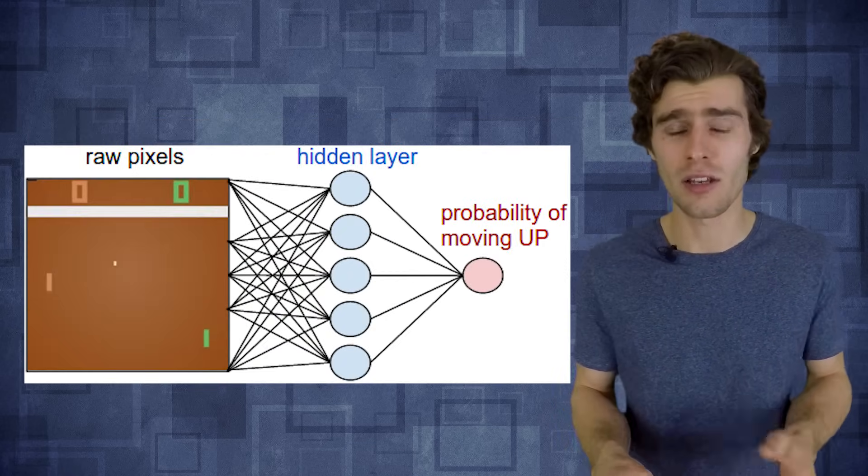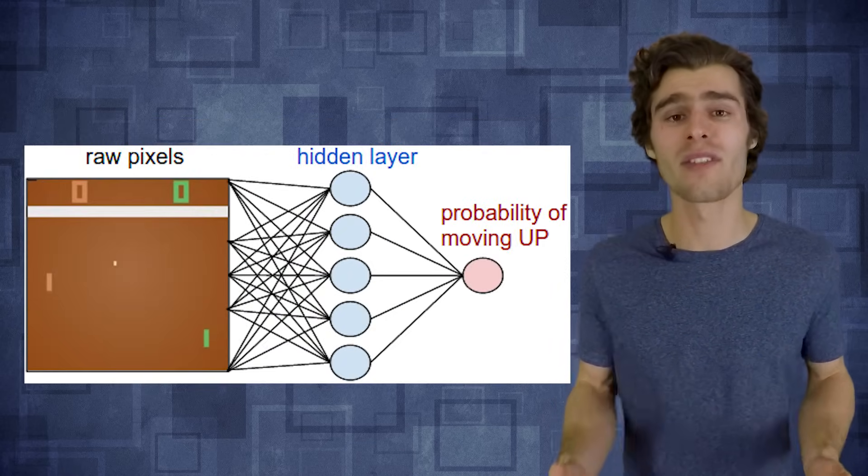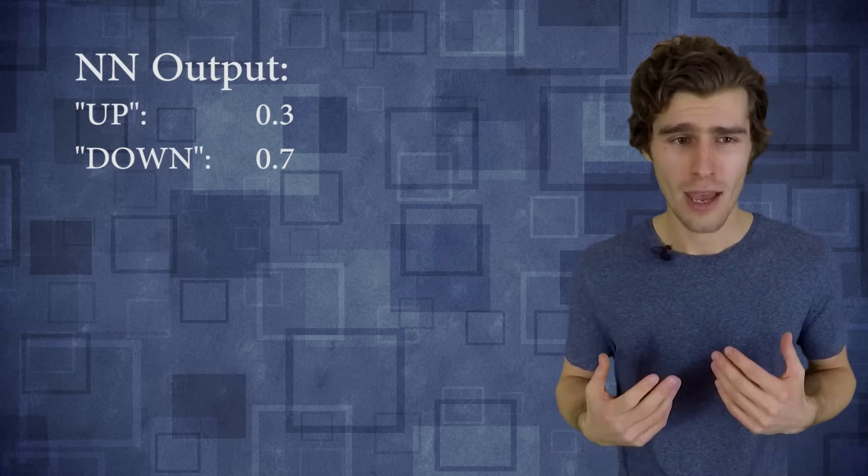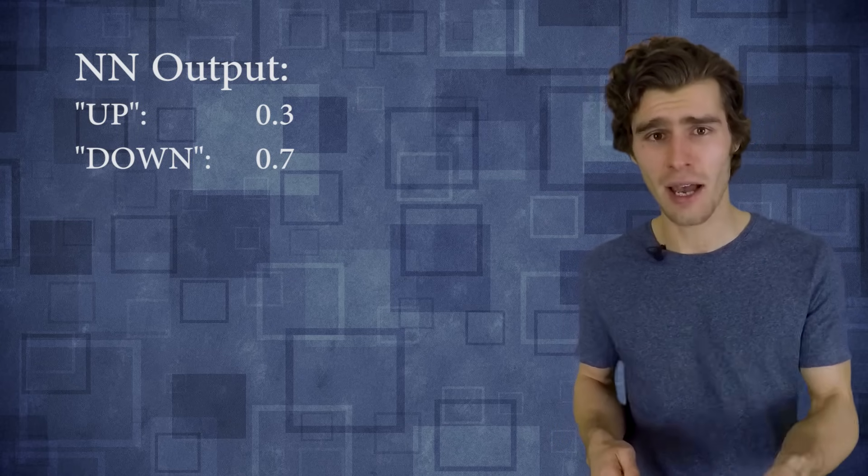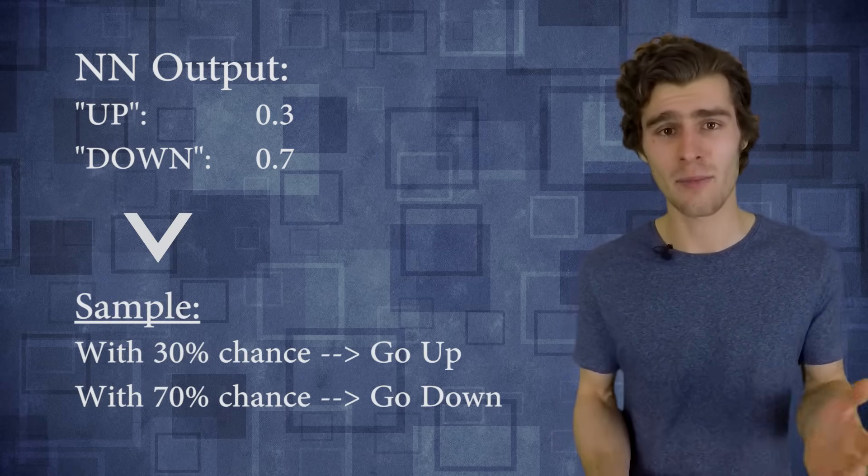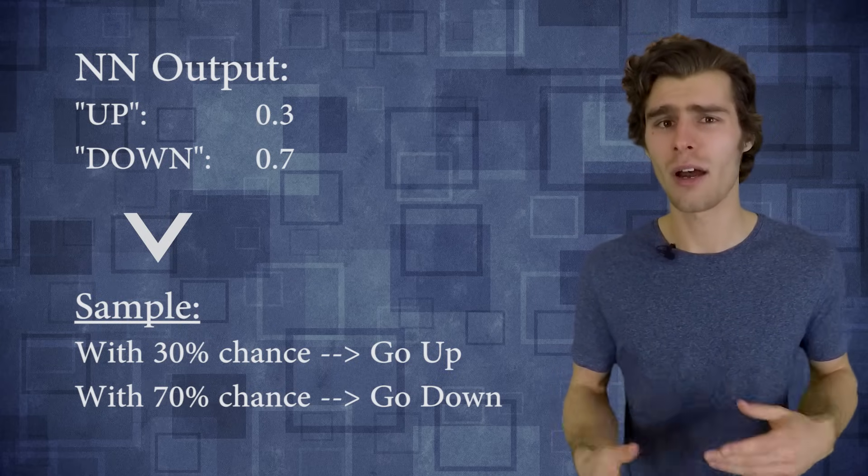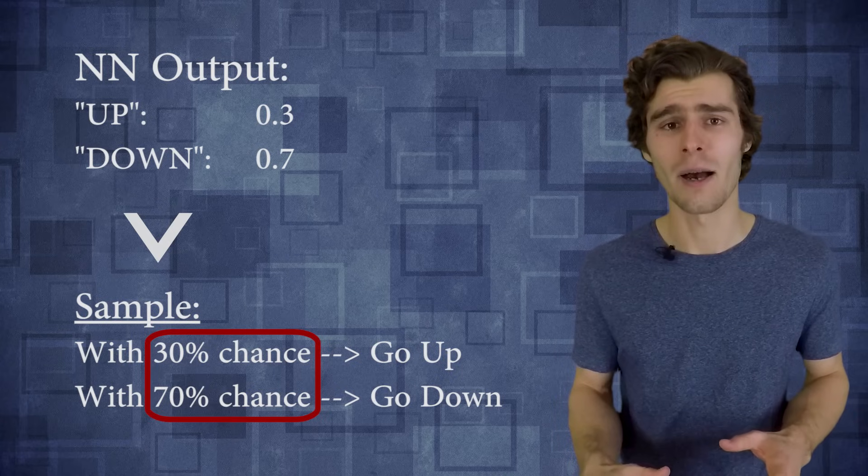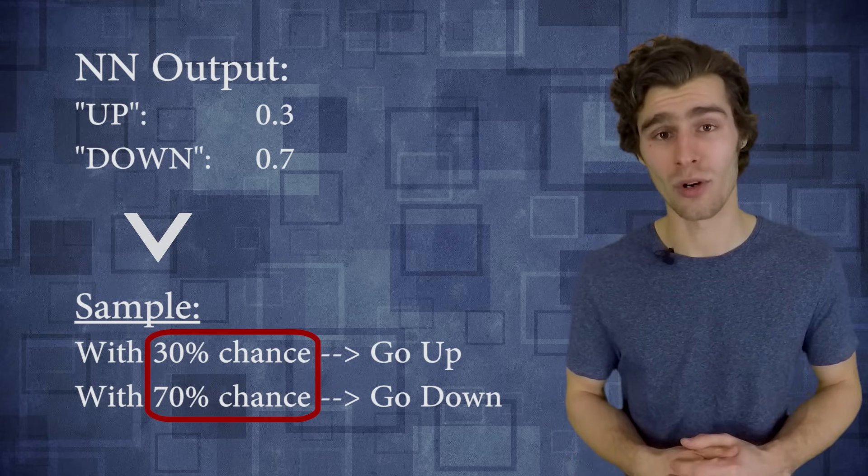And the network in this case could be a fully connected network, but you can obviously apply convolutions there as well. And now in reality, the output of your network is going to consist of two numbers, the probability of going up and the probability of going down. And what you will do while training is actually sample from the distribution so that you're not always going to repeat the same exact actions. And this will allow your agent to sort of explore the environment a bit randomly, and hopefully discover better rewards and better behavior.